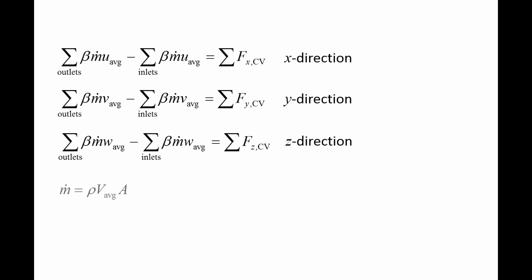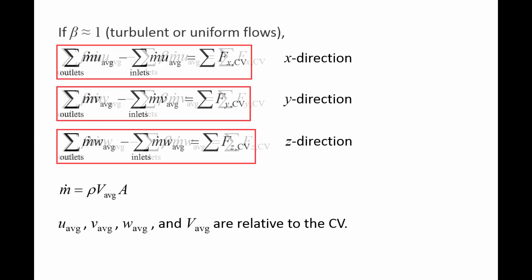When calculating m-dot, remember to use the total speed v_average, not a component of the velocity. Additionally, it is important to remember that the components of the velocity, as well as the total speed v_average, are the flow speeds relative to the control volume. For turbulent flows, the correction factor beta is approximately equal to 1, and for uniform flows, beta is exactly 1. Since most real flows are turbulent, it is common to set beta equal to 1 in the conservation of linear momentum equations.